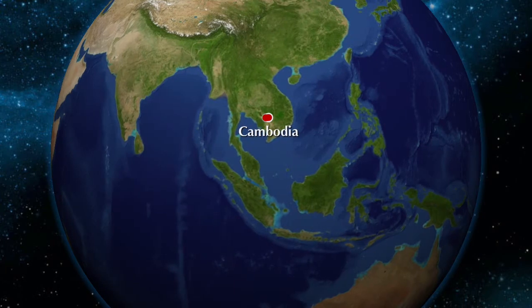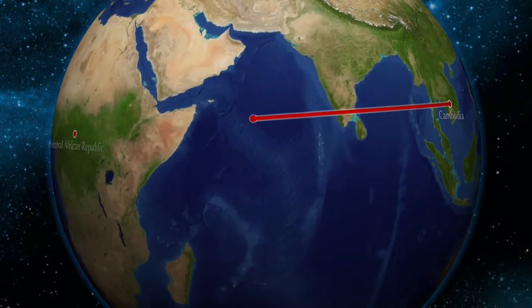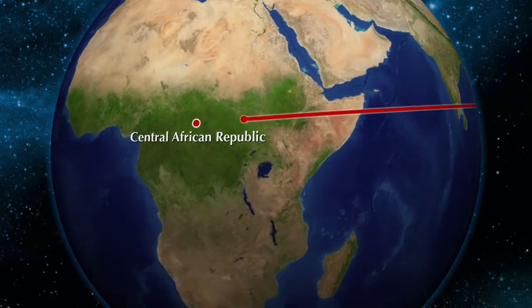Cambodia is a common source of parasite resistance. From there, resistance spreads to Africa, where malaria has a significant effect.